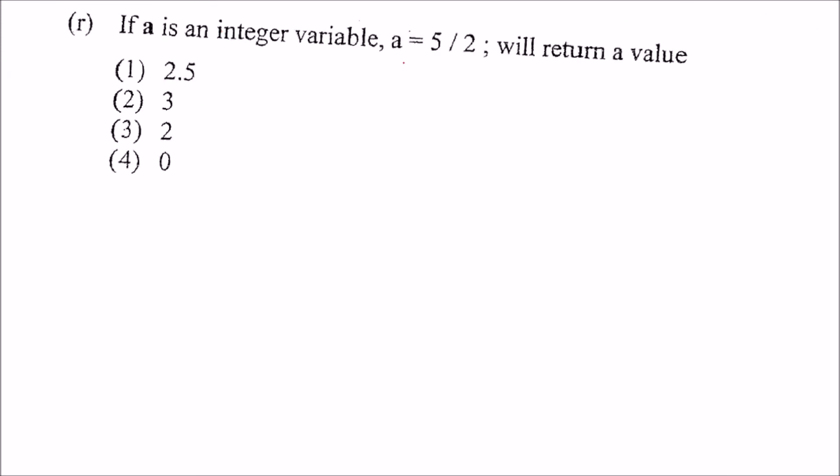If a is an integer value, a is equal to 5 by 2 will return what? 5 by 2 is what? You get 2.5. But, because these two are integer, you will get only integer value. This will be discarded. So, the answer will be this one. Third.